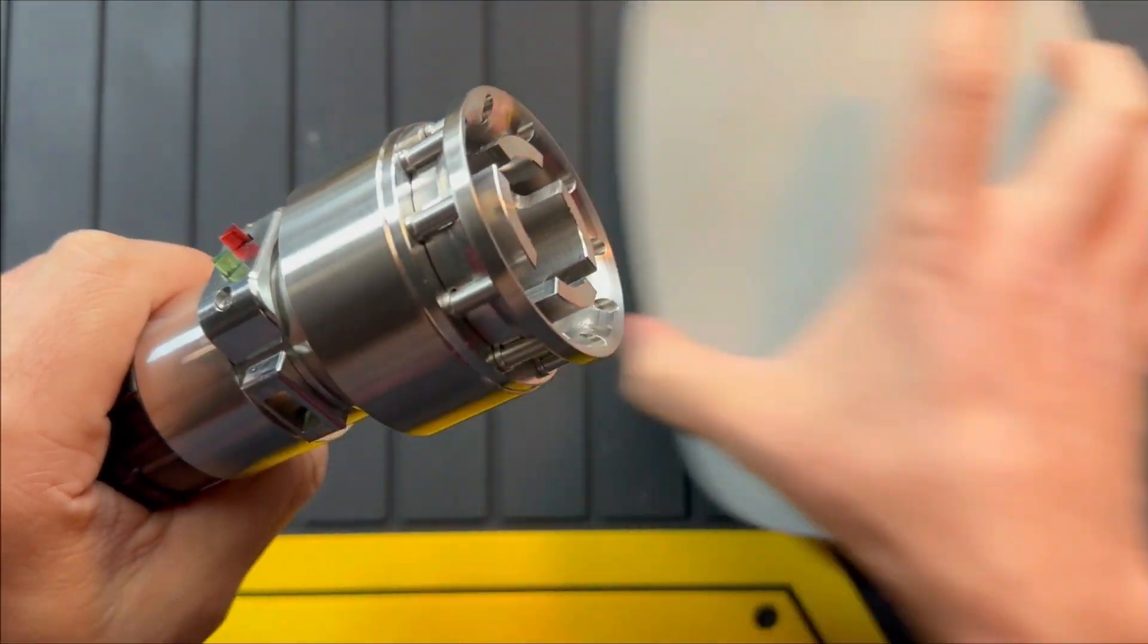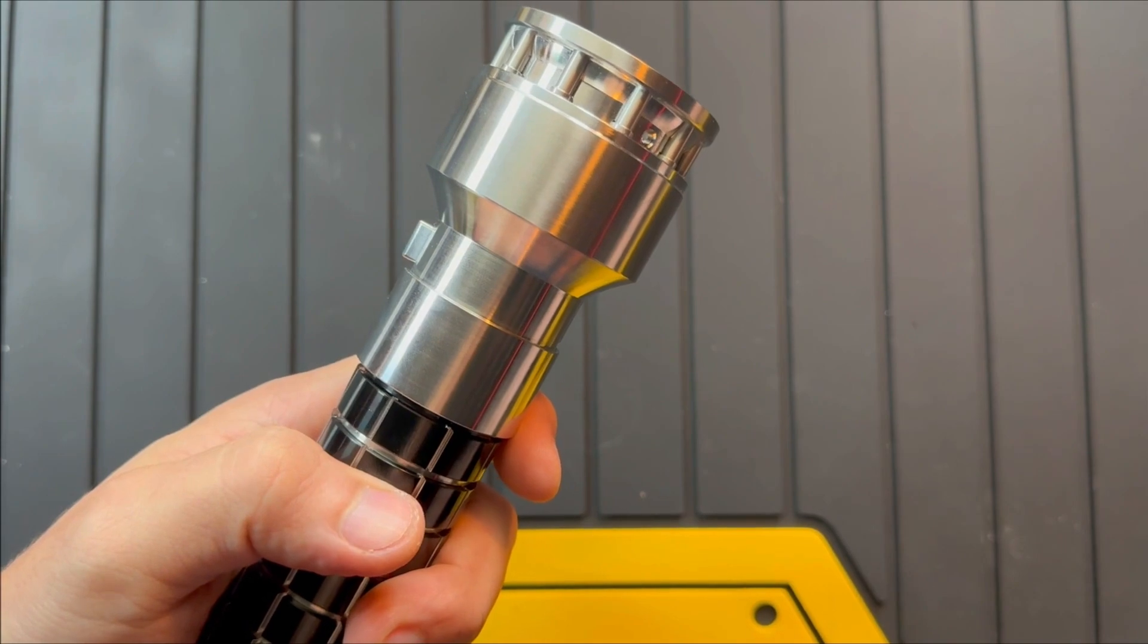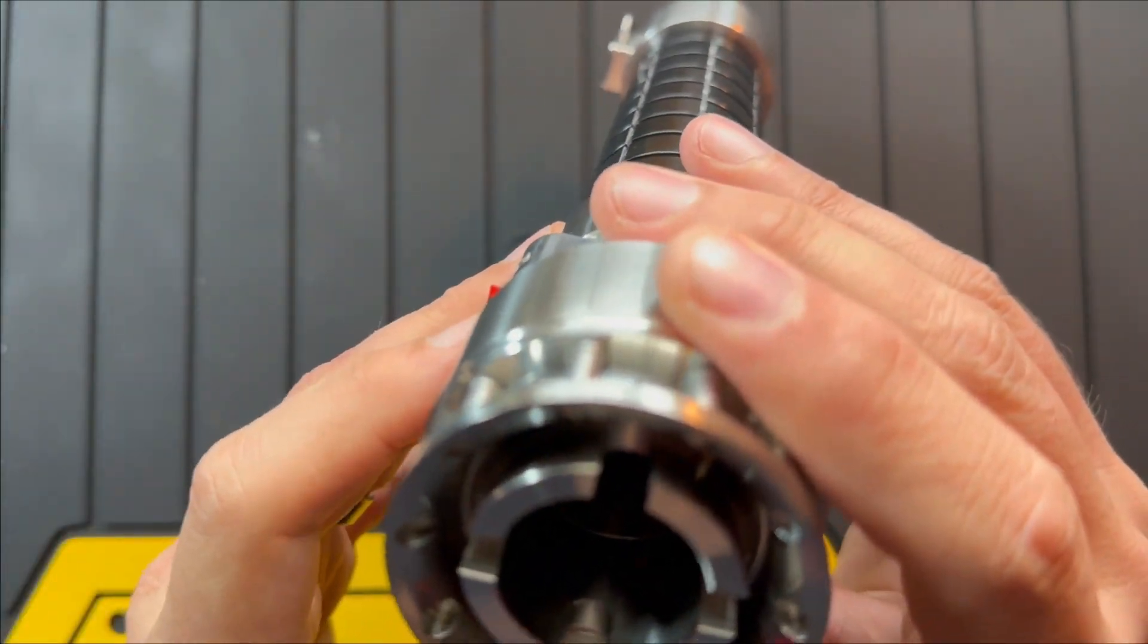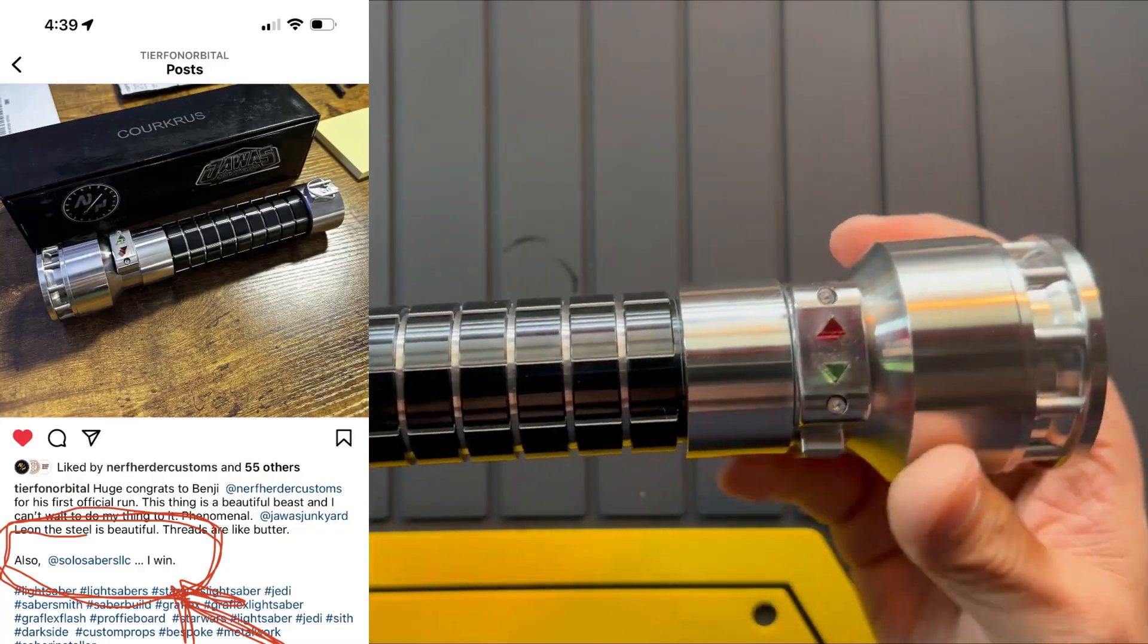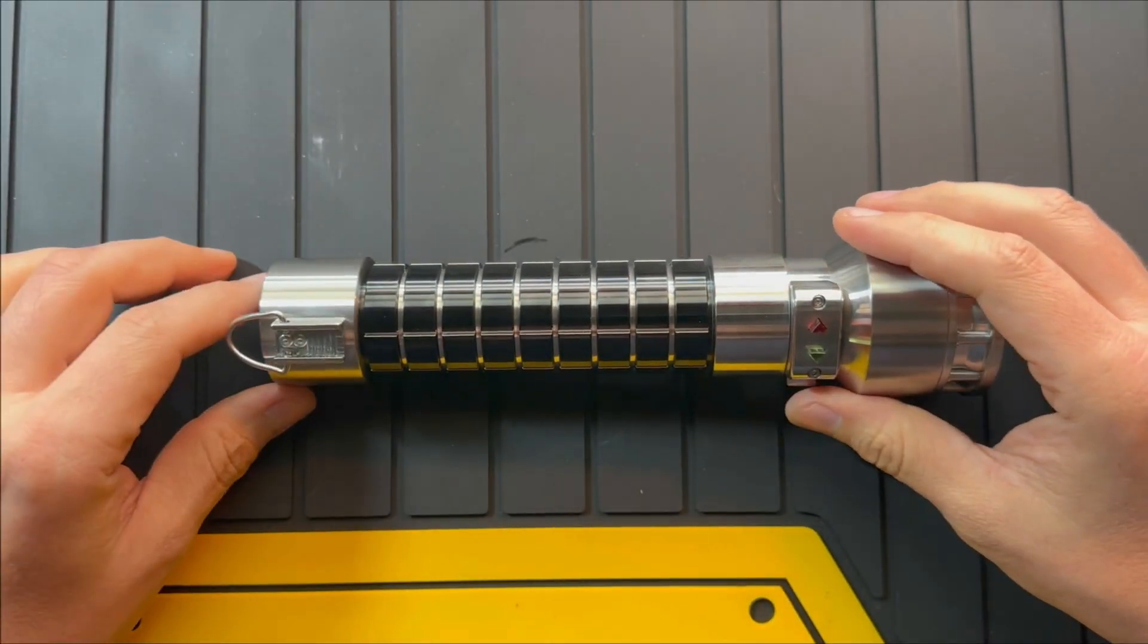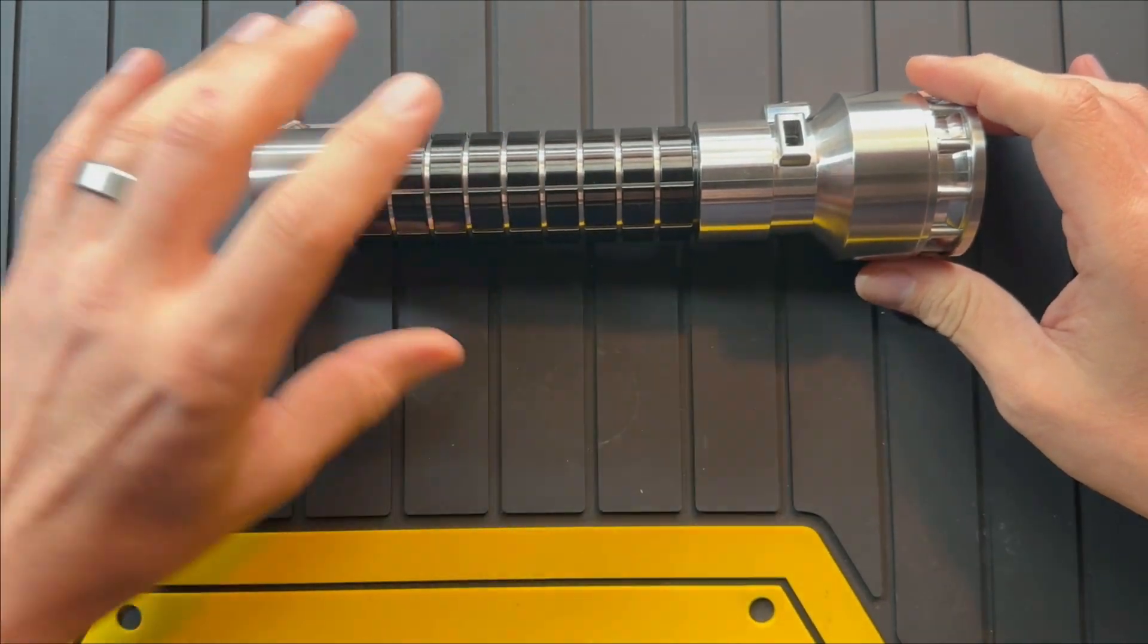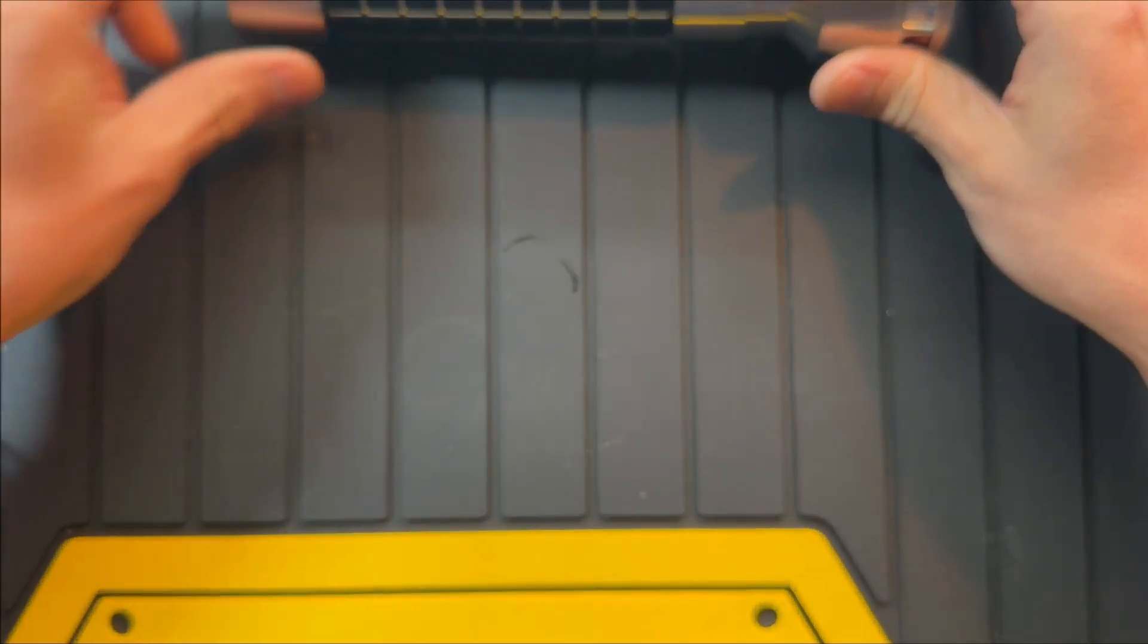So this is really cool. This just came in this morning. There was a lot of them that got shipped out at the same time. My buddy Tim over at Tierfond Orbital and fellow smuggler, him and Benji, both fellow smugglers of mine, got his yesterday and decided to poke a little bit of fun at me on his Instagram. All right, so now I got a little surprise for him, because even though I got mine one day later, I got this one. This one is actually Leon's. I got Leon's from Java's Junkyard because I'm going to install it.